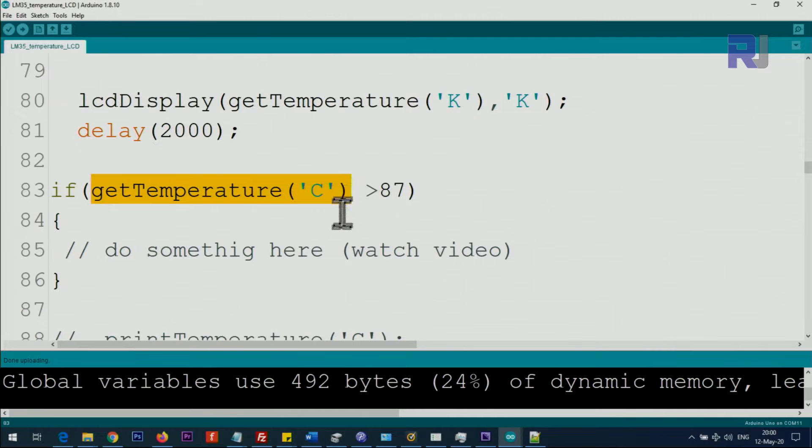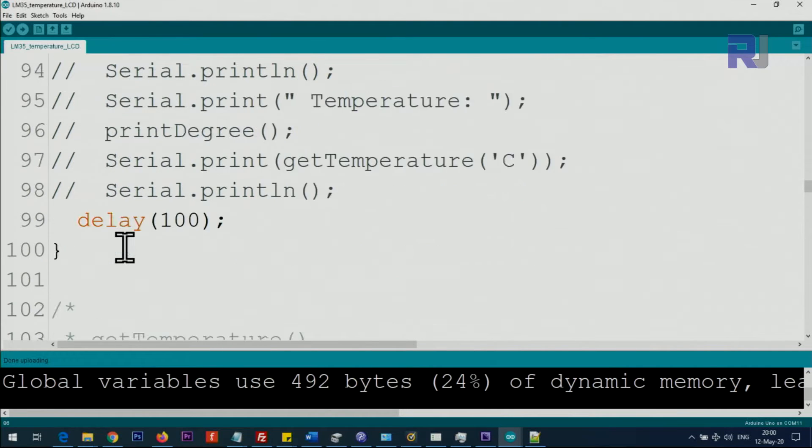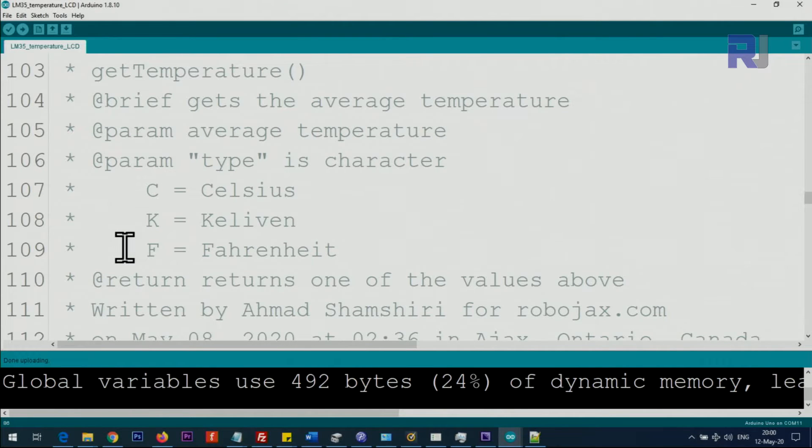And if you want to take some action based on temperature, so this is giving you the temperature in Celsius and you want to say if the temperature is greater than 85, 87 degrees, do something. So this is the opening and closing for the condition and whatever action you want to take, put it in here, like turning on a relay or fan or something. So you can do the action here. If you need the full explanation of this code, it is available as part of my Arduino course at Udemy.com.